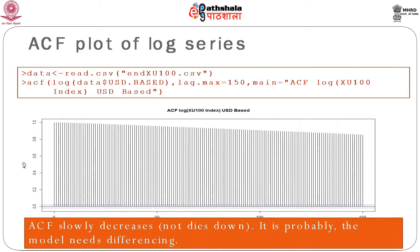The Excel file name is nxu100.csv. First, we need to import the data into R — the CSV format is the easiest way to do this. If you import the data and store it in an object called 'data', you can easily access all the columns. Our main interest is the USD-based BEST 100 index. Before analysis, we need to explore through exploratory analysis to determine possible model choices. Here, the first thing I will do is plot the ACF using the ACF function available in R, using the log return of the index.